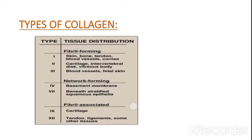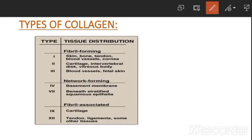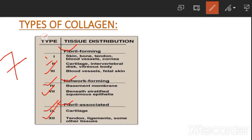There are three main types of collagen: fibril-forming, network-forming, and fibril-associated. In total, seven types of collagen are present — types one, two, three, four, seven, nine, and twelve.